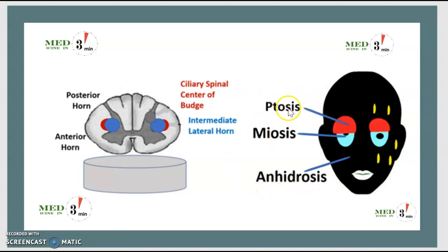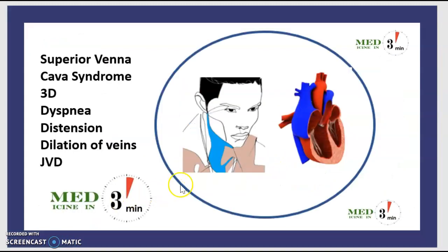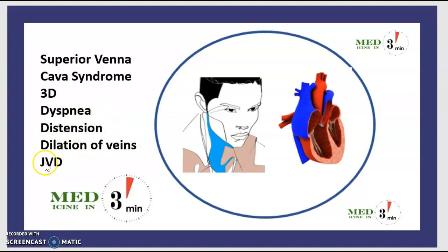Regarding superior vena cava syndrome, there are three D's: dyspnea, distension, and dilatation — specifically jugular vein dilatation.